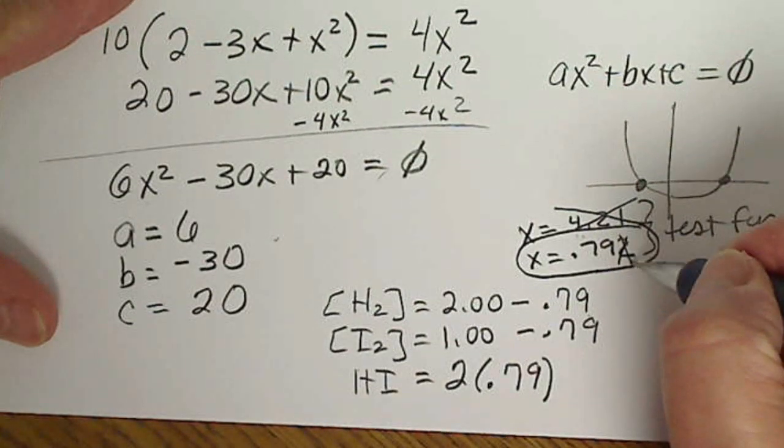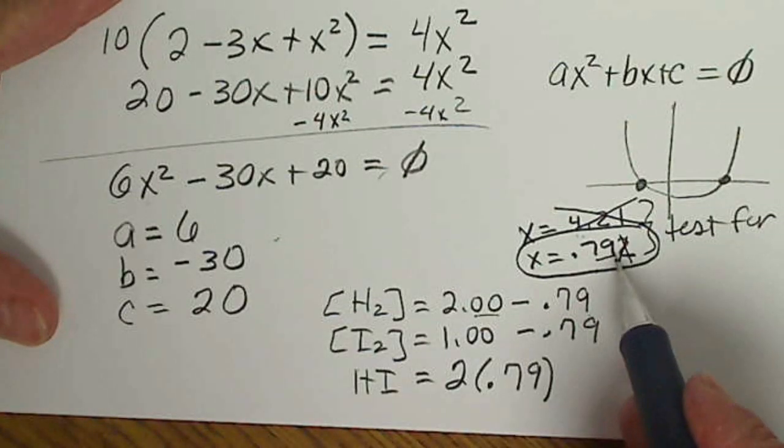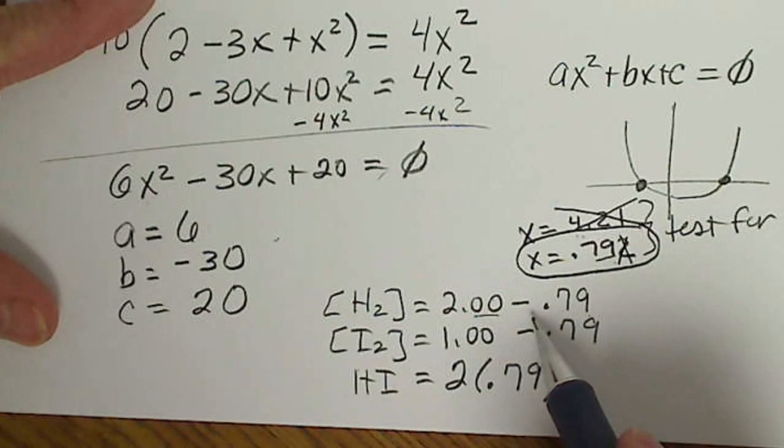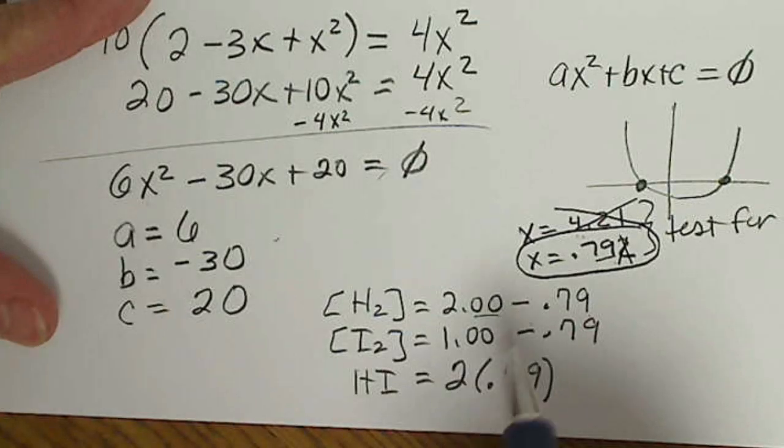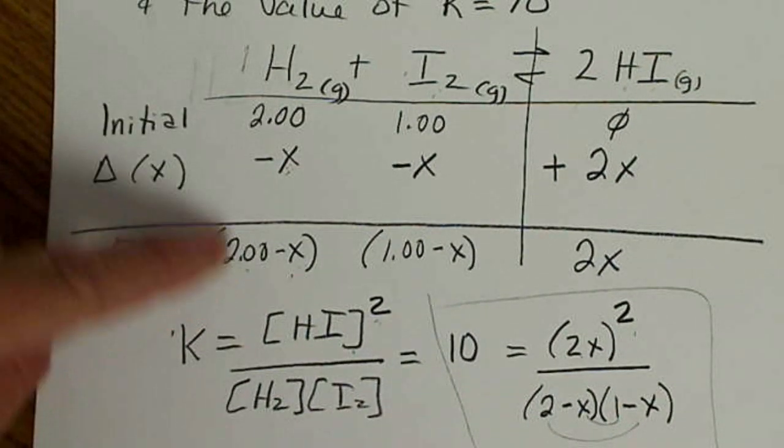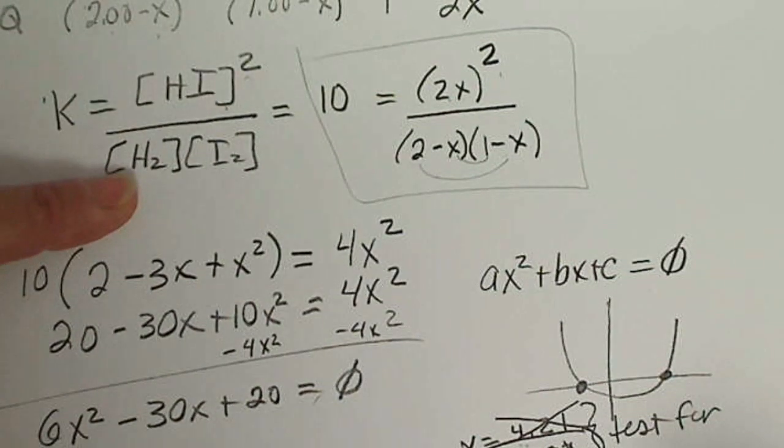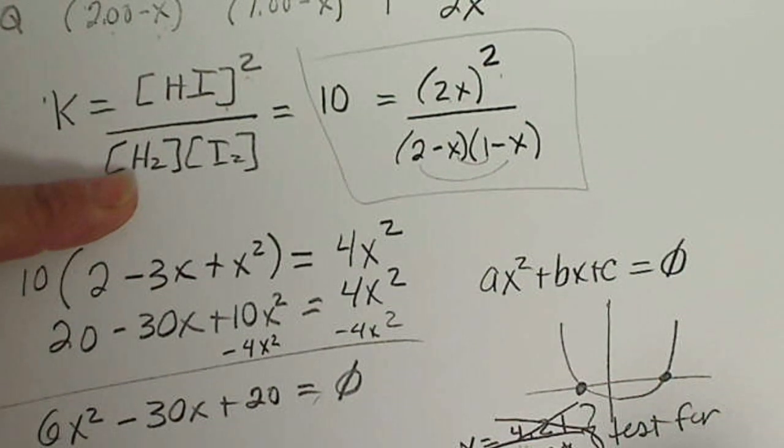So the value for X, I just went ahead and used two significant figures, two decimal places there. So the X value that makes physical sense is what we plug back into each one of these equilibrium expressions that we obtained from our initial conditions. And then just do that now, so that would be 1.21, 1.58 atmospheres.